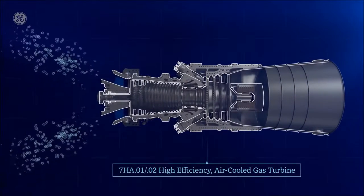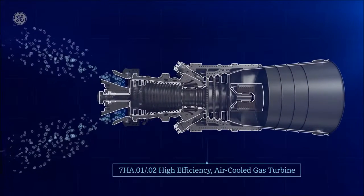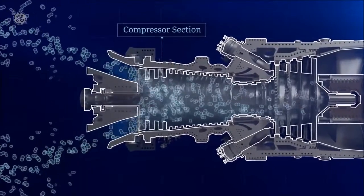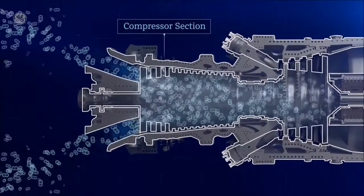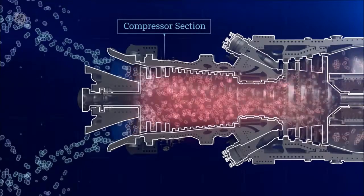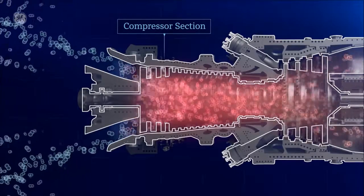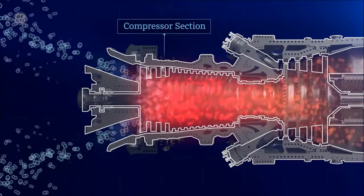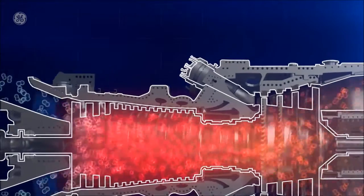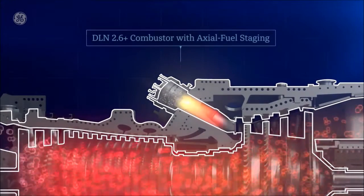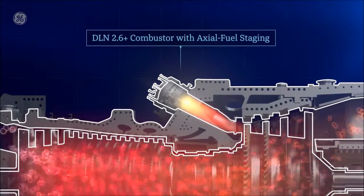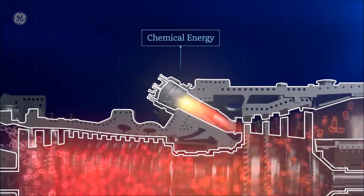First, air is drawn in through one end of the turbine. In the compressor section, all those air molecules are squeezed together, similar to a bicycle pump squeezing air into a tire. As the air is squeezed, it gets hotter and the pressure increases. Next, fuel is injected into the combustor where it mixes with the hot compressed air and is burned. This is chemical energy at work.